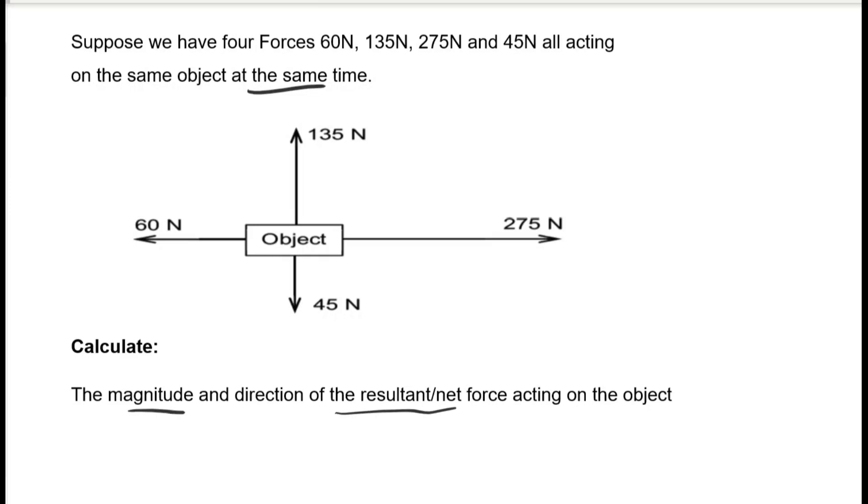Now before we do that, we need to analyze the situation here. The 60N force and the 275N force are called collinear forces. This means that they are acting along the same line.